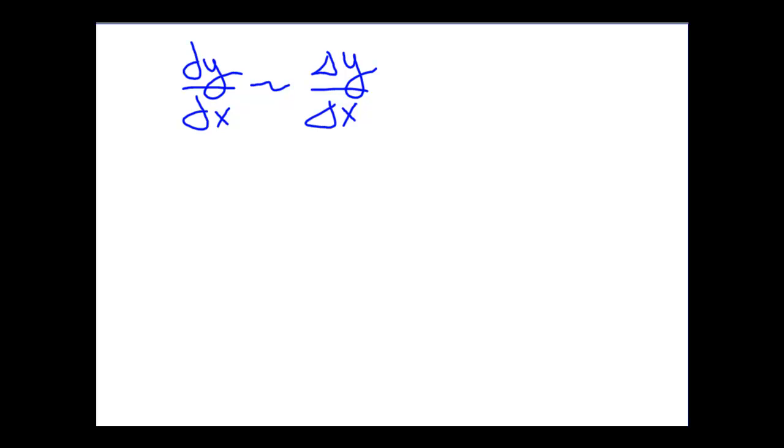This is only an approximation because they're not always going to be equal. Depends on the size of your delta x. And we know that this is the slope, that delta y over delta x gives this slope.